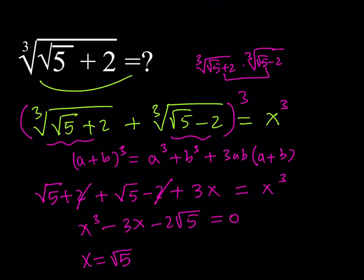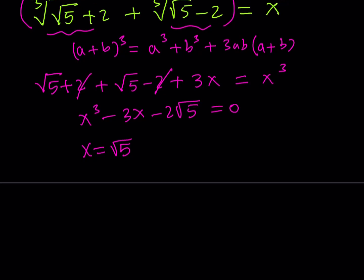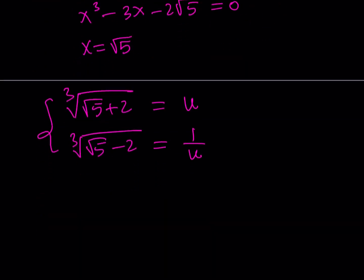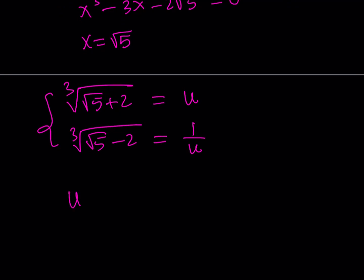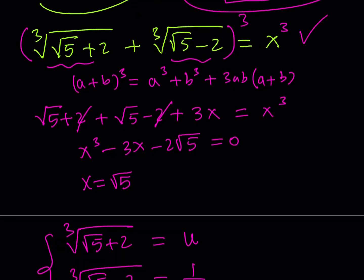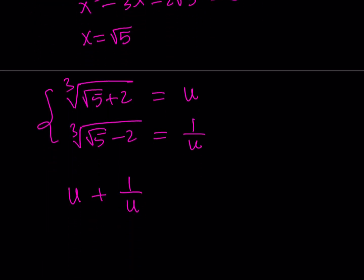There's another important fact: when we multiply the two cube root expressions, we got 1. So if you call the cube root of (√5 + 2) as u, then the other expression with the minus sign is its reciprocal 1/u, because their product is 1. Since they add up to x = √5, we get u + 1/u = √5.